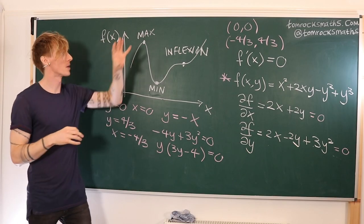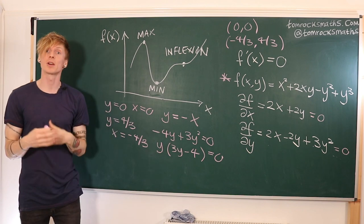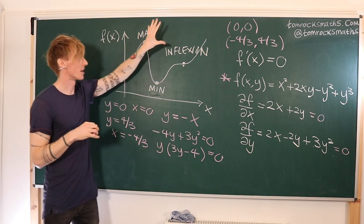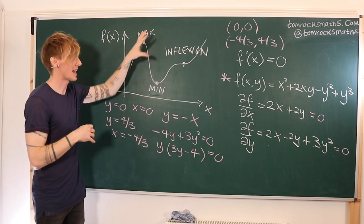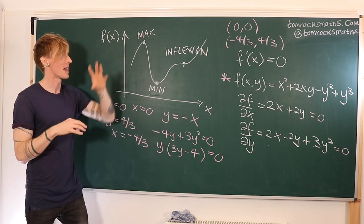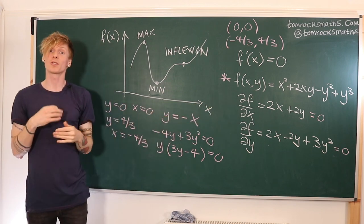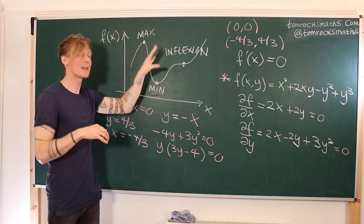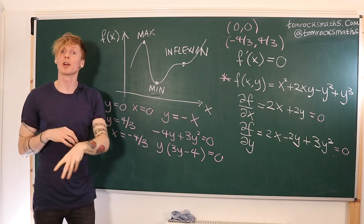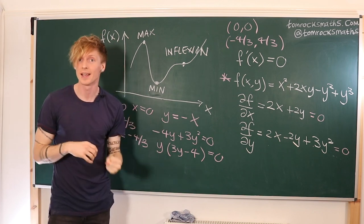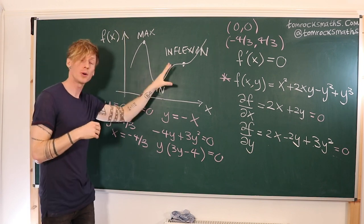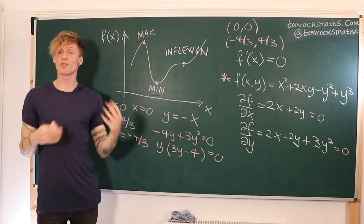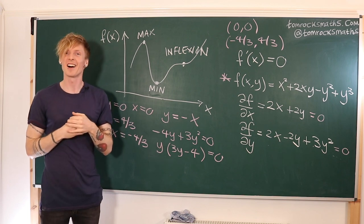Now that we know the location of our critical points, the next step is going to be to classify them. Just as we have a maximum, minimum, or inflection point for a function of one variable, we can have a maximum, minimum, or what is called a saddle point in the case of a function of two variables. So join me in part two of this video when I will go through the method of the discriminant, which is used to classify a critical point for a function of two variables. Thank you very much for watching — please do remember to subscribe if you've enjoyed this video and hopefully I'll see you again soon.